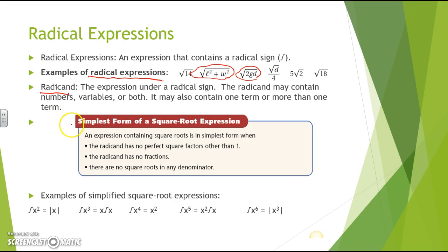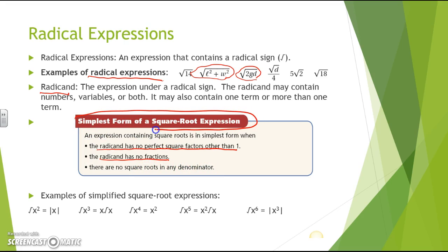In this box here, the simplest form of a square root expression — an expression containing square roots — is in simplest form when the radicand has no perfect square factors other than one, the radicand has no fractions, and there are no square roots in any denominator. Making sure all of these conditions have occurred means that the radical expression is in simplest form.